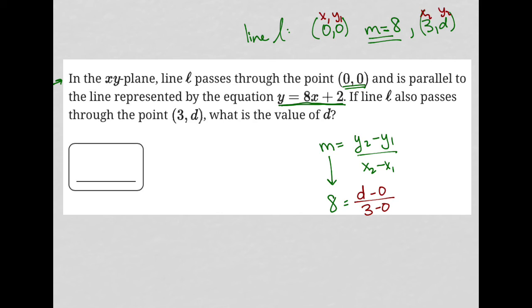So I have 8 equals d over 3. I can then multiply both sides by 3, and I have 24 equals d. Therefore, my correct answer here is 24.